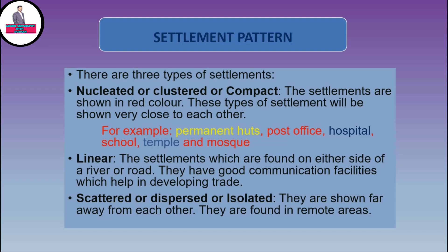The second type of settlement is linear. The settlements which are found on either side of a river or road have good communication facilities which help in developing trade. The linear type of settlement will be shown on either side of a river or road and they are well connected with metal roads which help in developing trade.